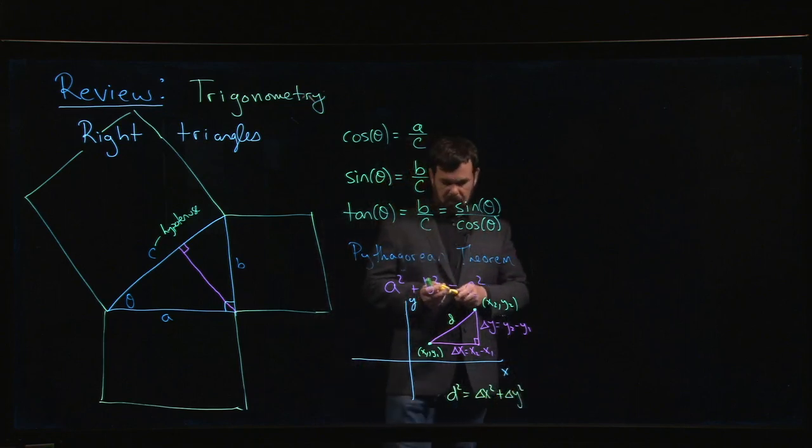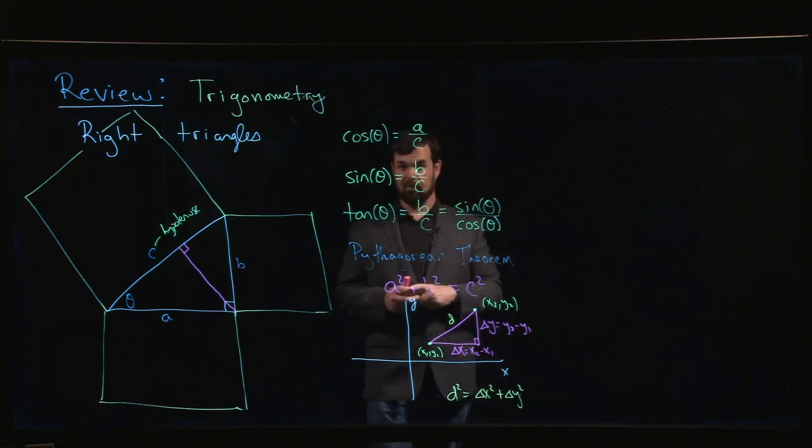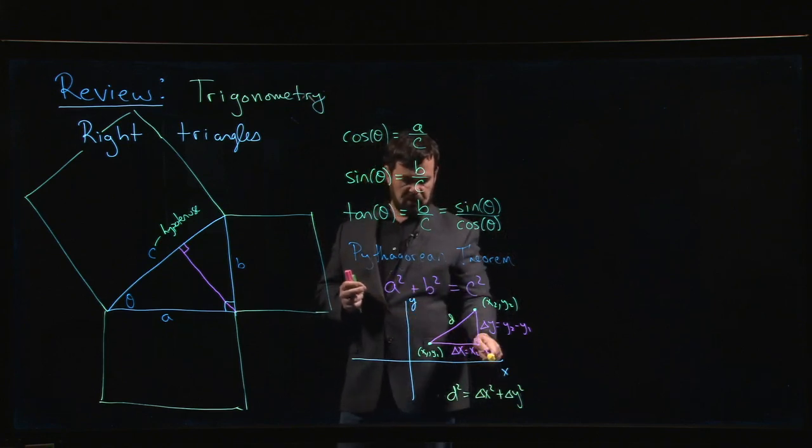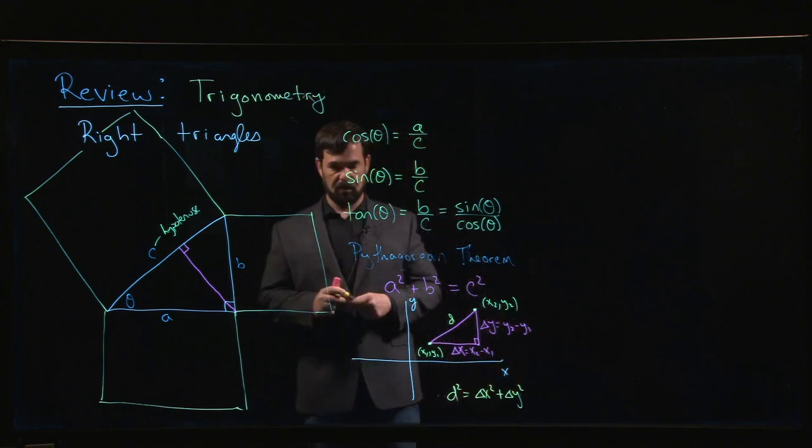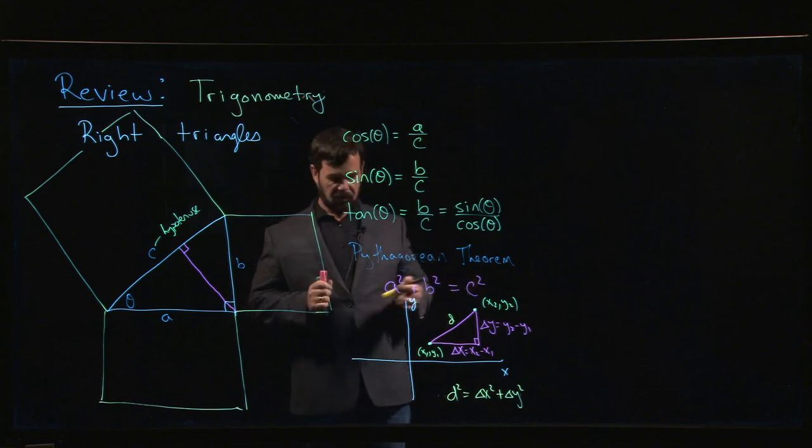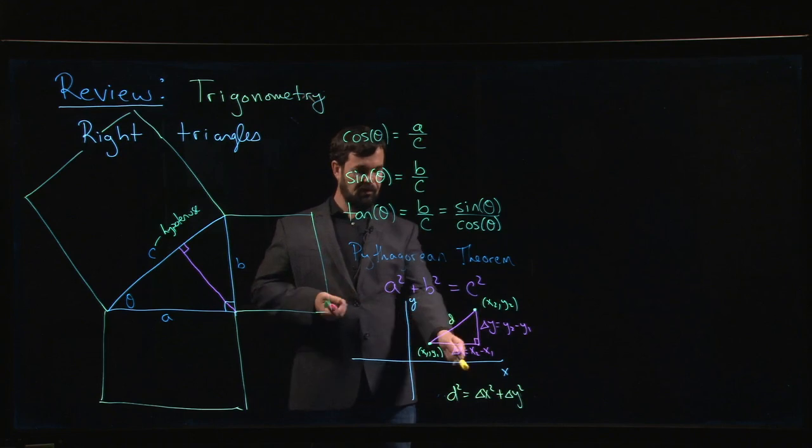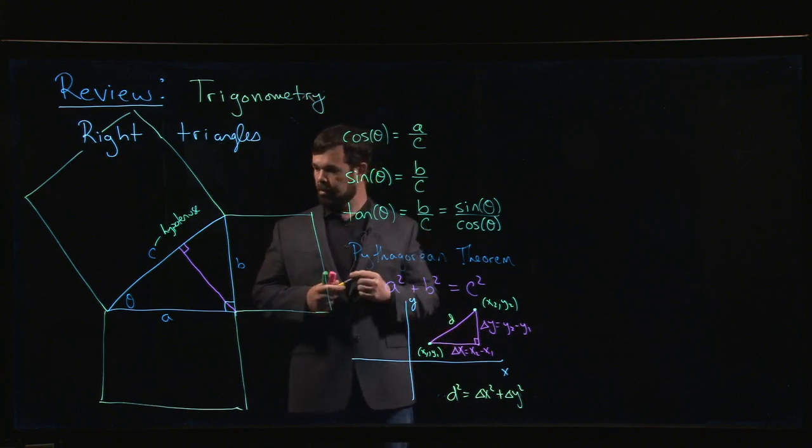And so this gives you this familiar distance formula that you probably saw in high school, that you take x2 minus x1, you square it, you take y2 minus y1, square it, add those together, take the square root, and that gives you the distance. So that's where that distance formula comes from. The distance formula comes from this Pythagorean theorem, which is really a statement about triangles.